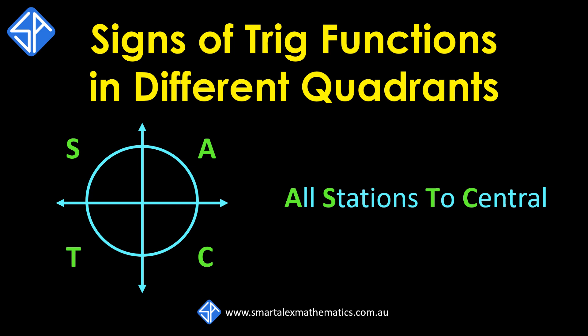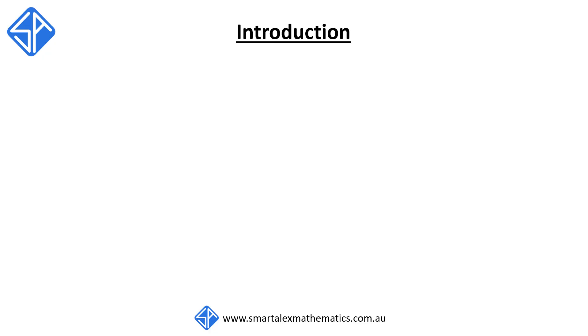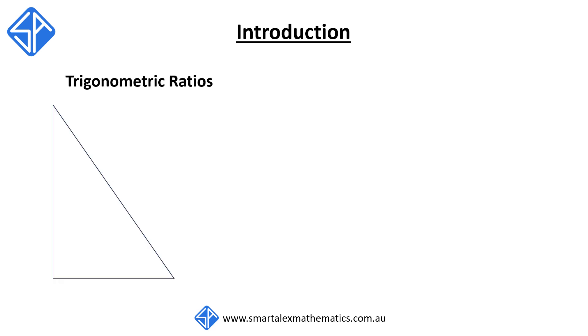In this video, we're going to look at why different trigonometric functions have got different signs in different quadrants. When we first started learning about trigonometry, we were introduced to sine, cos, and tan as ratios of sides in a right angle triangle. This concept is known as trigonometric ratios.